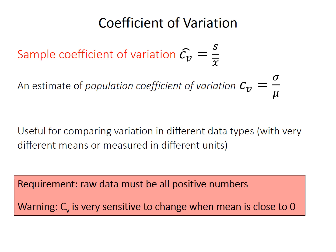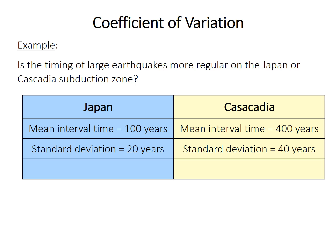So you may still be wondering, when should I use the coefficient of variation? Here's an example. Let's say we want to know whether earthquakes, like large earthquakes, occur more regularly in Japan or in Cascadia, the subduction zone along western North America. So we want to know, is the time between earthquakes more regular in Japan or in North America? I've just made up some numbers here. The mean time between earthquakes in Japan is 100 years, and it's 400 years in Cascadia. The standard deviation of the time between earthquakes is 20 years in Japan and 40 years in North America. So if we just look at standard deviation, we'd say that Japan is much more regular. The time between earthquakes is much more regular than it is in North America because the standard deviation is only 20 years and not 40 years.